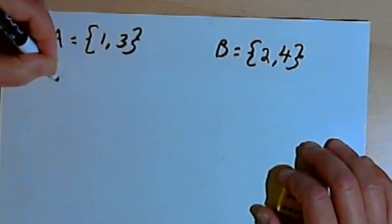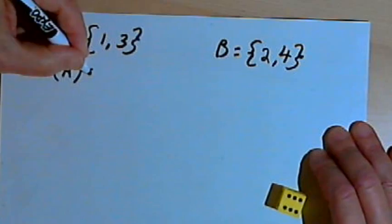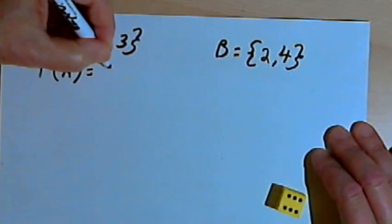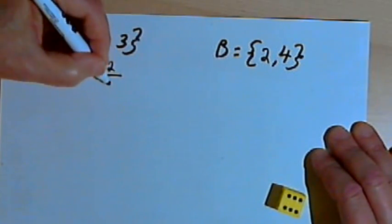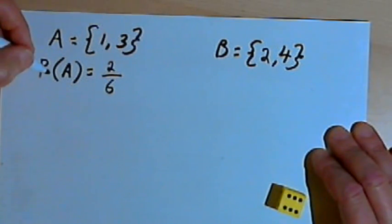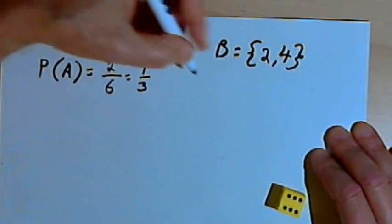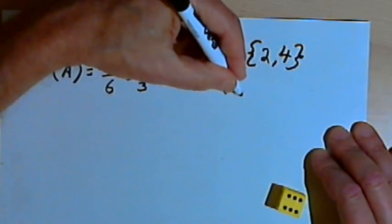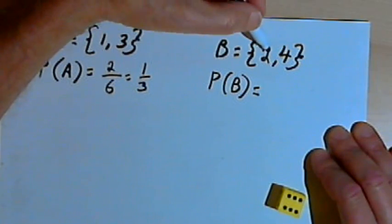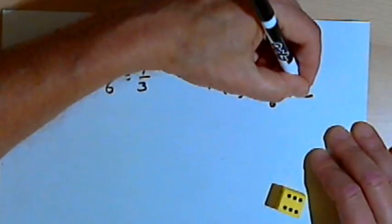I can figure out the probability of each of the events. The probability of A is the number of ways A could happen — since there are two different ways A could happen, either a 1 or a 3, it's going to be 2 divided by the number of different outcomes, which is 6. So the probability of A is 2 over 6, or 1 over 3. The probability of B also has two different ways of happening — either a 2 or a 4 — so the probability of B is also 2 over 6, or 1 over 3.